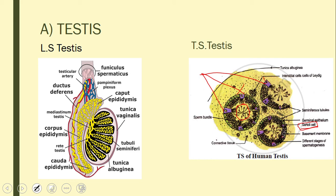Between the seminiferous tubules are cells called interstitial cells, also known as cells of Leydig — very important from the MCQ point of view. These cells of Leydig secrete the male hormone androgen, also called testosterone.